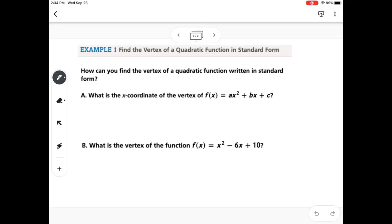So the question is, how can you find the vertex of a quadratic function written in standard form? The x-coordinate is going to be found using the formula negative b over 2a.